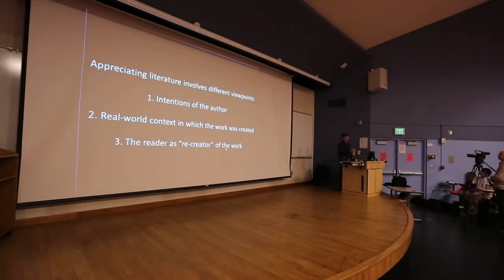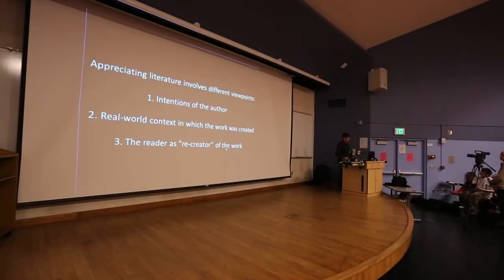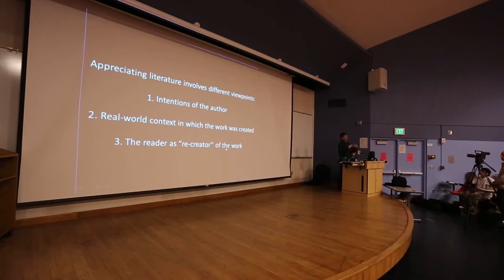In this lecture we'll explore three very distinct ways of appreciating and understanding literature — all valid, and sometimes overlapping or contrasting. First, you want to understand the intentions of the author. Second, you want to look at the real-world historical context in which the work was written. Finally — and this is often forgotten — the reader is also recreating the work when reading it. The reader is in a sense the re-author of the work, and can get a message out of it that's different from what the author put in, applying it to the modern world.